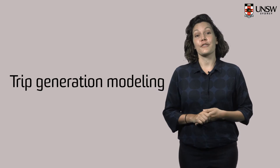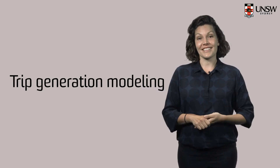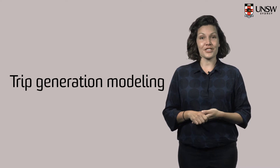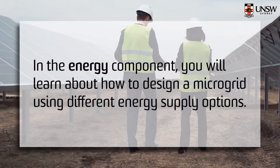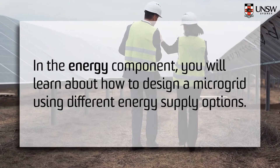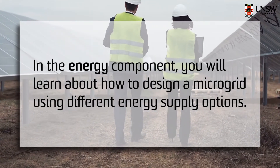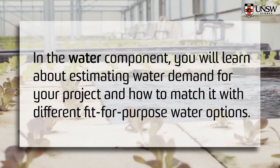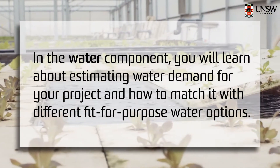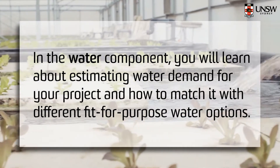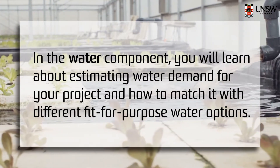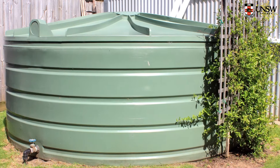You will start by learning about trip generation modelling and how the future employees in your case study scenario will be commuting every day. In the energy component, you will learn about how to design a microgrid using different energy supply options. And in the water component, you will learn about estimating water demand for your project and how to match it with different fit-for-purpose water options. We will pay particular attention to rainwater and rainwater tank design.